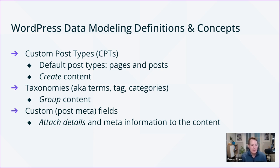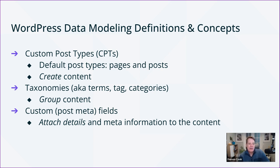A question came up: what are the use cases for different taxonomies — when to use category versus tag versus custom taxonomy? Categories allow for a parent-child hierarchical organization, while tags are a more free-flowing taxonomy you can assign to your custom post types. That's probably the best explanation I have off the top of my head, and I can circle back if I think of anything else to clarify.